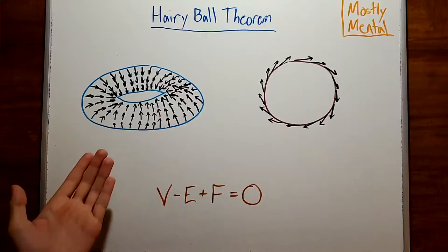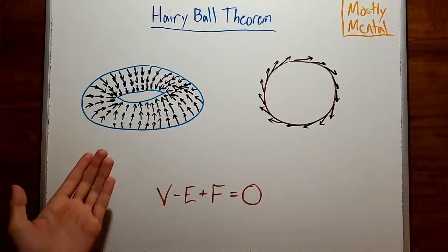What's so special about donuts with one whole or even-dimensional spheres? Well, the topologists in the audience may recognize those as shapes where the Euler characteristic is zero. Why does that show up? I'll leave that as a question for you. Thank you for watching. I hope to see you again soon.